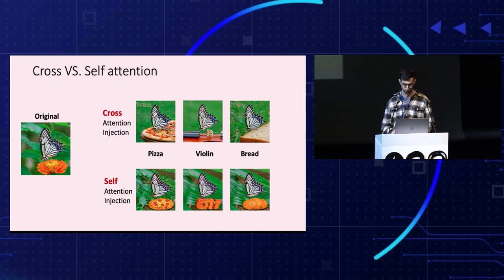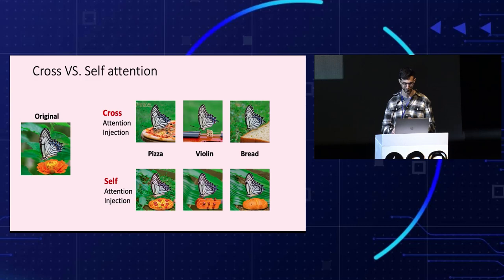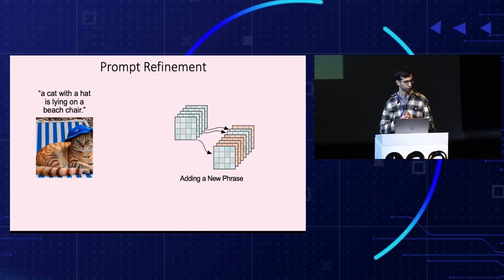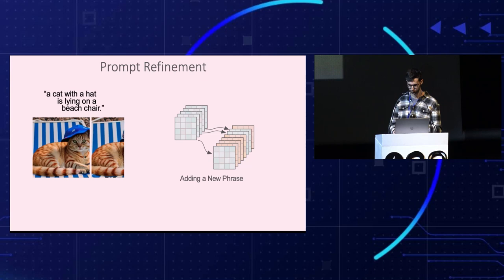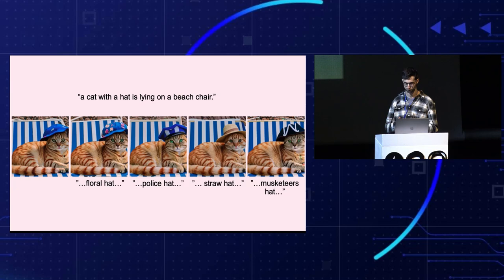We can also inject self-attention, which maintains the image structure more firmly, but does not correlate to the text tokens. Since we still want to allow some degrees of freedom, we use self-attention for only about 20% of the steps. If we wish to add a new phrase to the prompt, we only inject the maps of the original prompt tokens. For example, here we specify different hats for our cat.